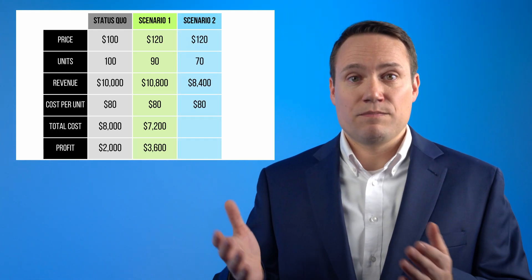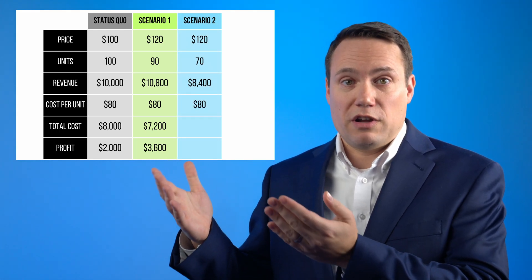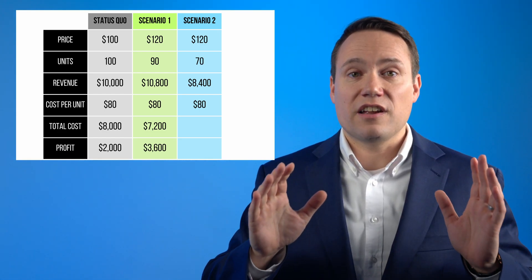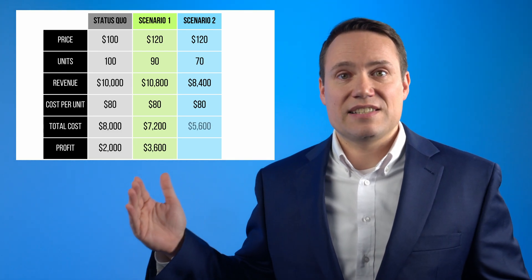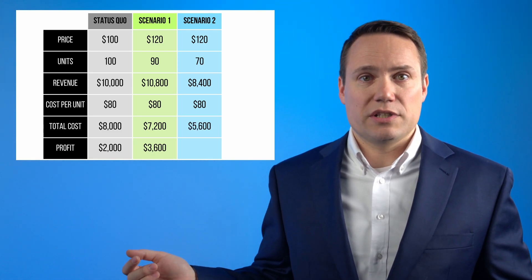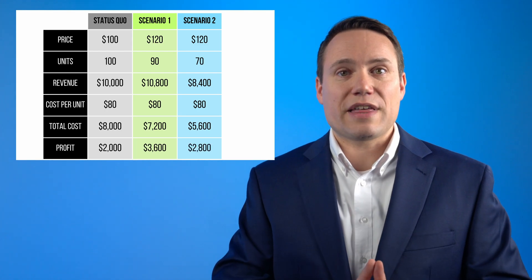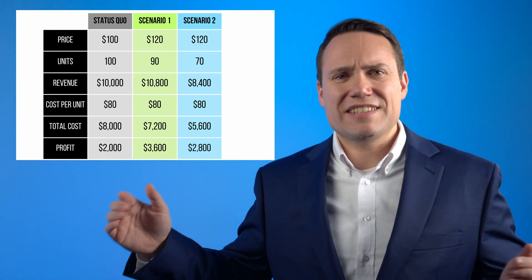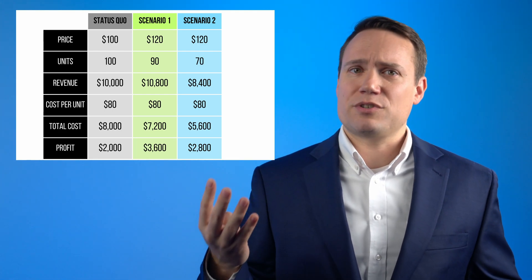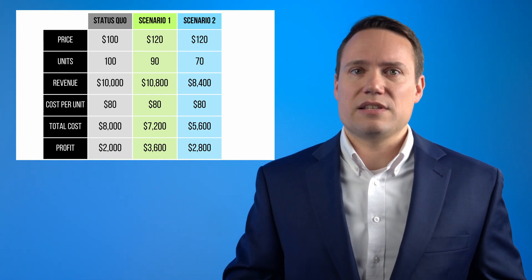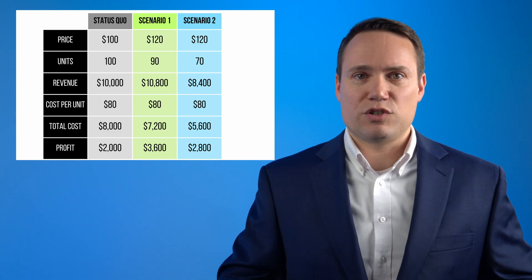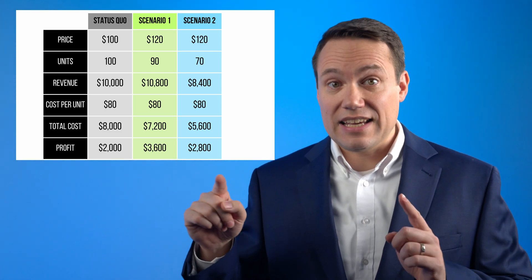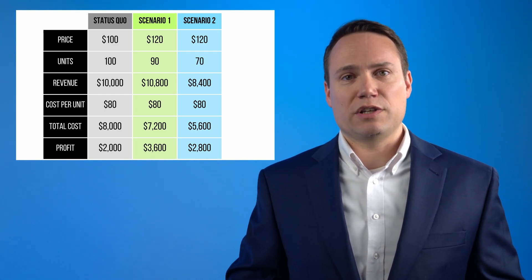In our second scenario, revenues drop to a mere $8,400 after the price increase. But the costs decrease also to $5,600 due to the decrease in units, and the company earns profits of $2,800. In other words, even in scenario two, profits have increased by 40%. So given current gross margins, in this scenario of elastic demand where both volumes and revenues drop, a price increase could make a lot of sense if the company seeks to optimize its profitability.